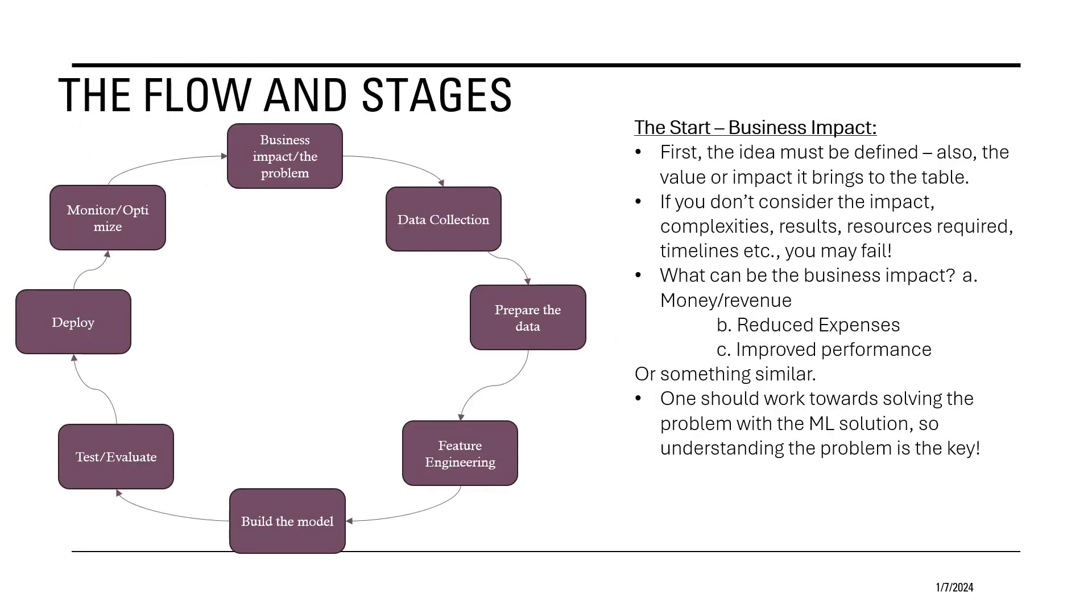The flow and stages are very clearly presented here as a very simple diagram. It starts with the business impact and the problem, then goes on to data collection, and then preparation of the data, feature engineering followed by that building the model, and then testing and evaluating the model, deployment, and monitoring the optimization. You can see that all these are very nicely presented and we will start with the first step which is nothing but the business impact.